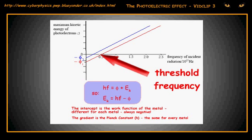The threshold frequency is the point where the graph line cuts the x-axis. This is the minimum frequency of radiation required to release photoelectrons from the surface of the metal.